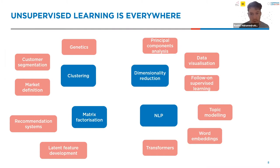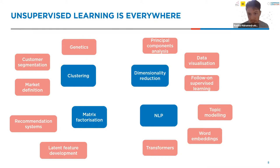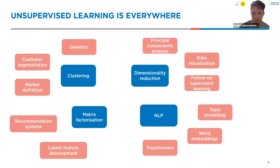Dimensionality reduction is another very useful subset of unsupervised learning — taking a dataset that might have hundreds or thousands of features and shrinking it while retaining as much information as possible, creating something more manageable and easier to visualize. Techniques like principal components analysis let us do that. Spanning all these areas, we also have natural language processing, where much development has come through unsupervised learning — passing models lots and lots of text data without someone labeling all the observations, allowing models to learn the structures embedded in words and sentences.